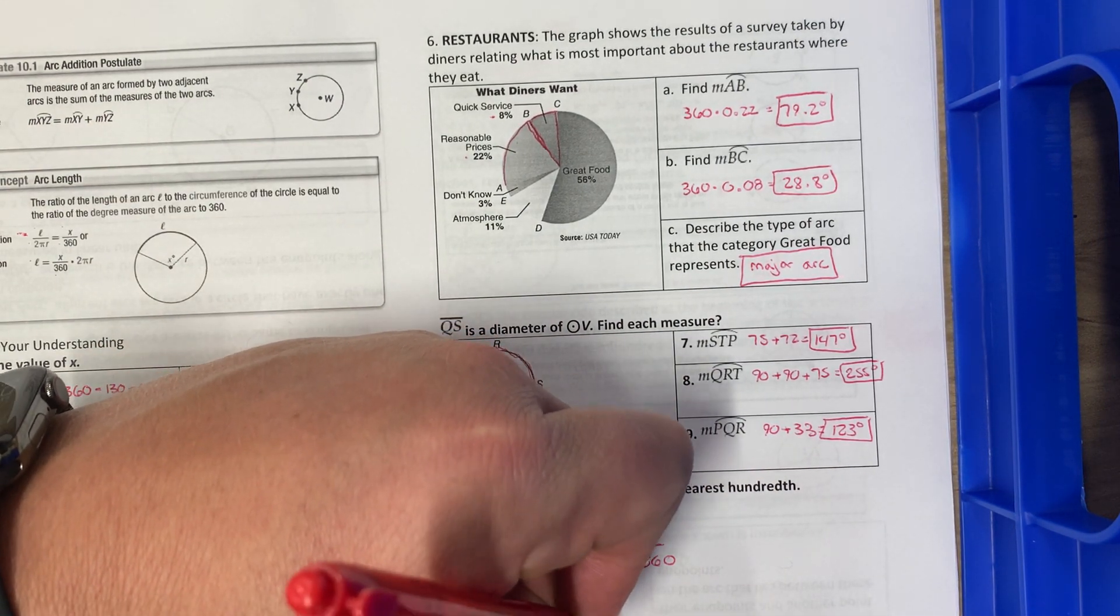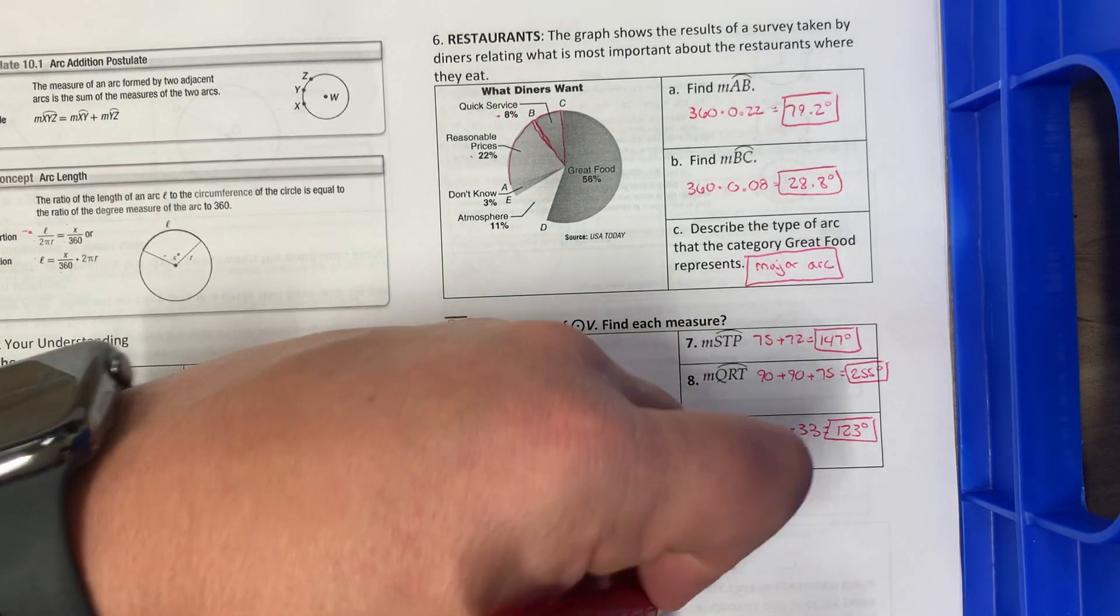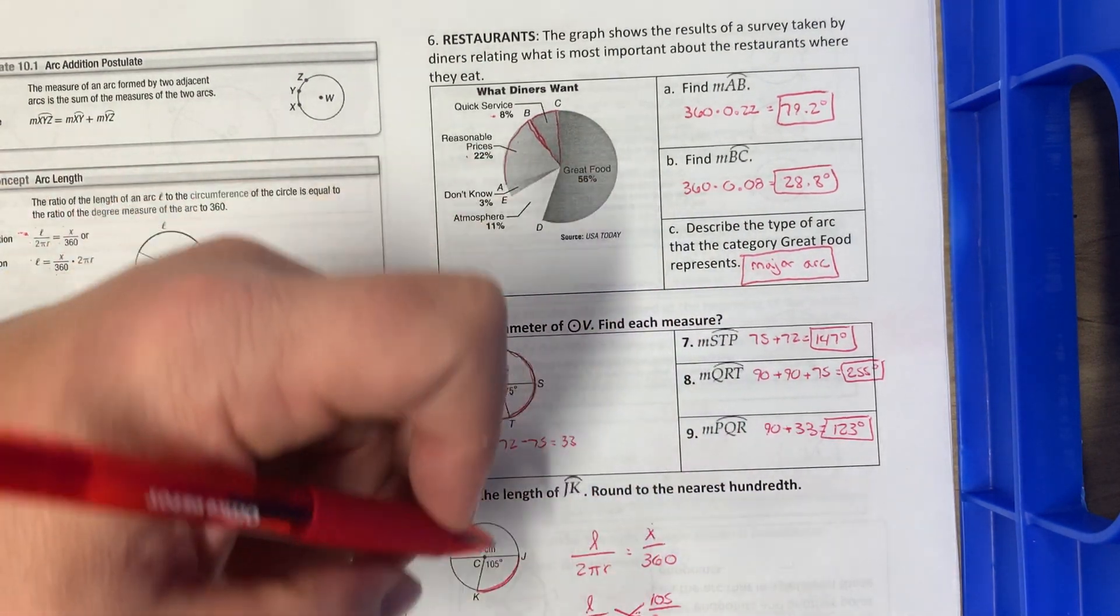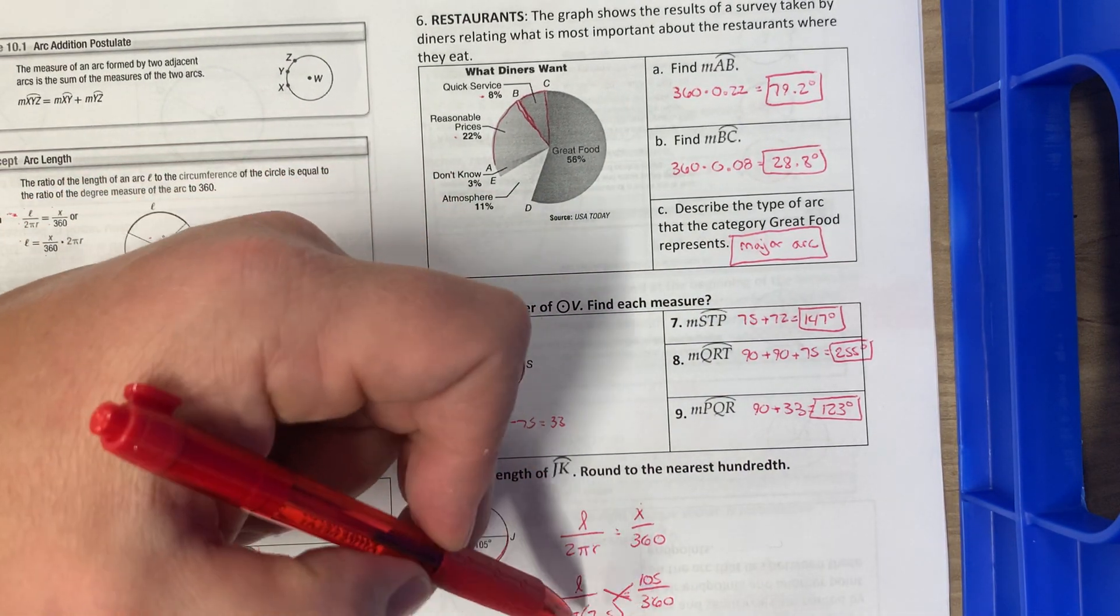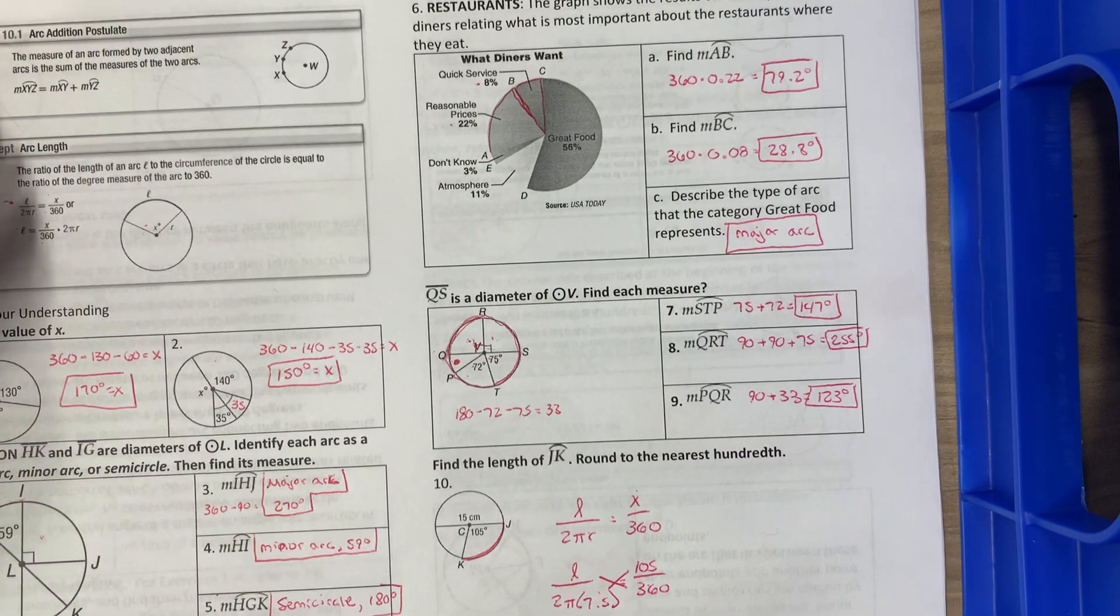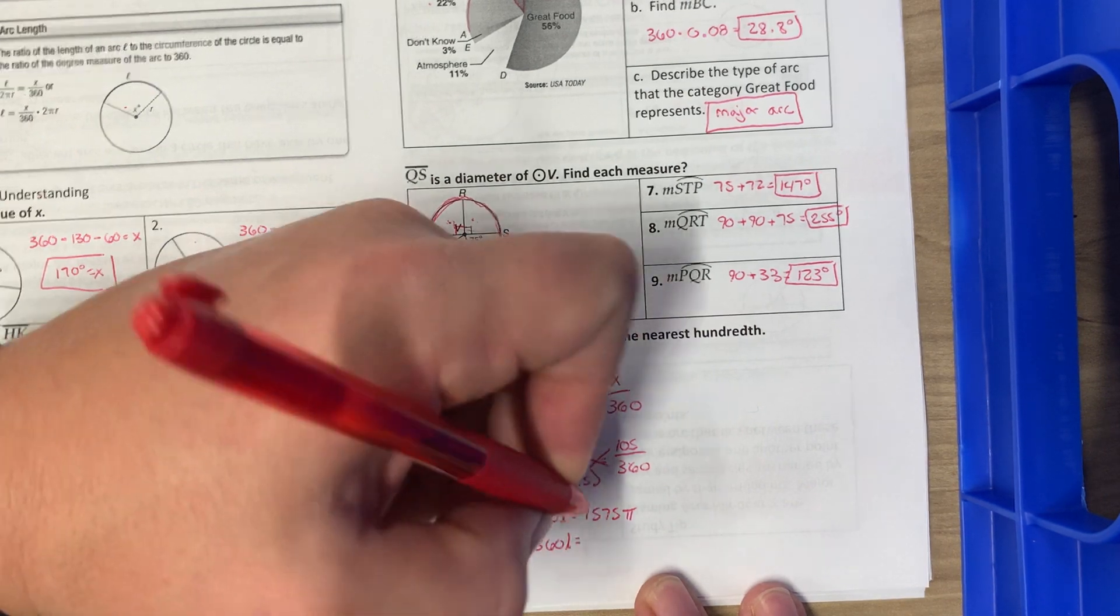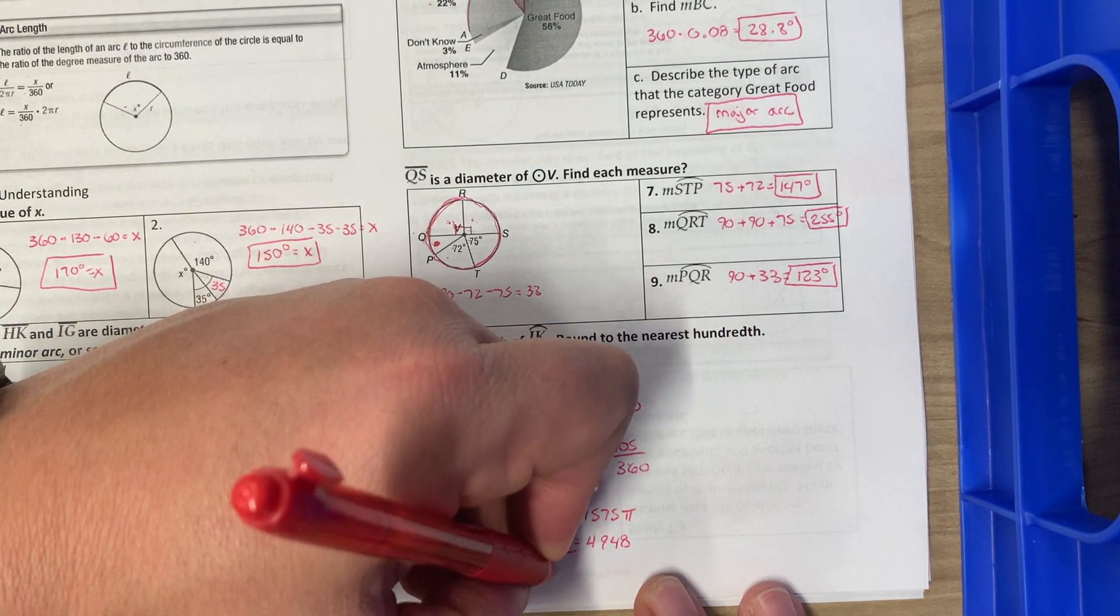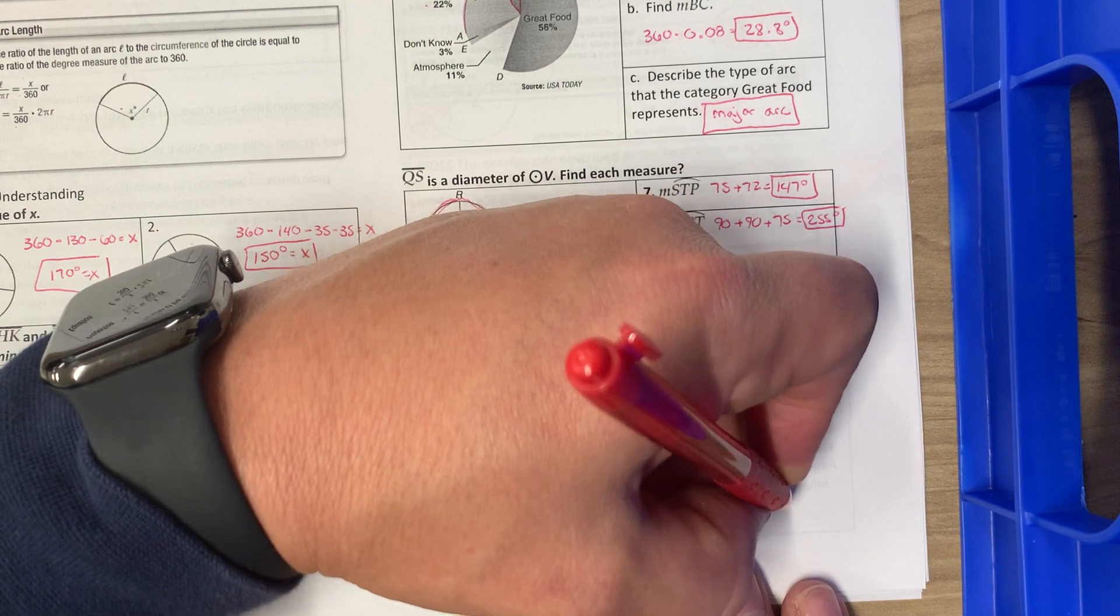So L over 2π times 7.5, X in our formula is the degrees we're talking about, so it's 105 over 360. Then we're going to cross multiply. So I've got 360L equals, and then if I multiply 105 times 2 times 7.5, I get 1575 and then still times π. I multiply 1575 times π, I get 4948 divided by 360. So my L is 13.74 centimeters.